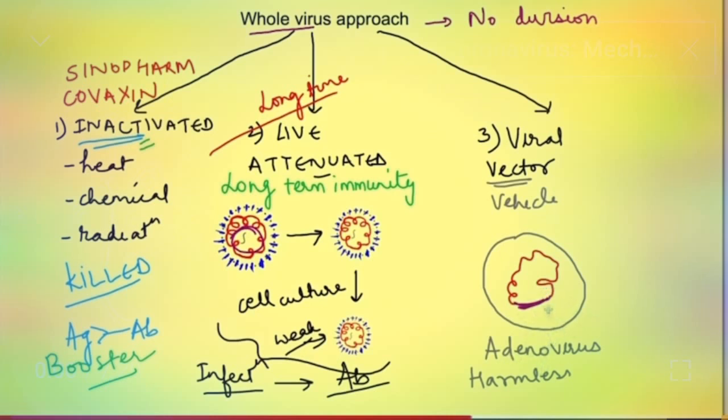This is known as viral vector vaccines. So virus is acting as a vehicle for carrying that particular genome into the cells so that once it enters into the cells of the body then these spike proteins can be produced and our immune system can become activated.